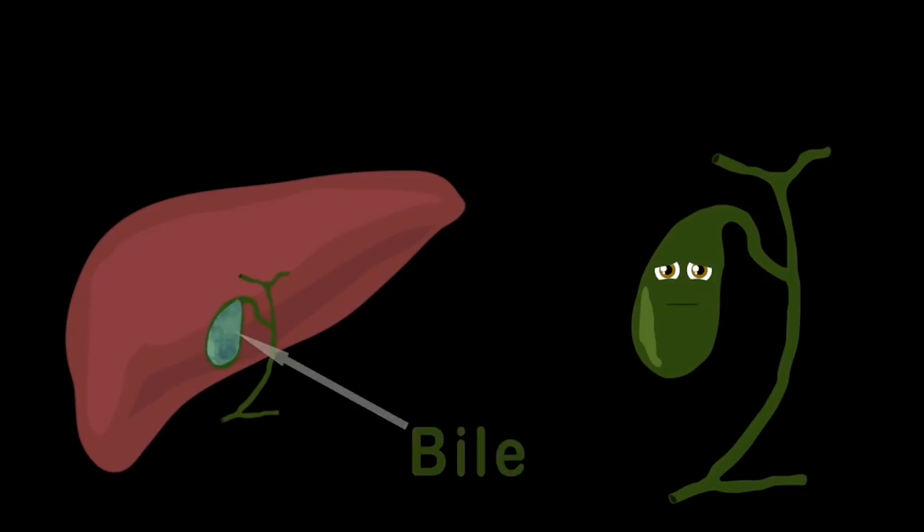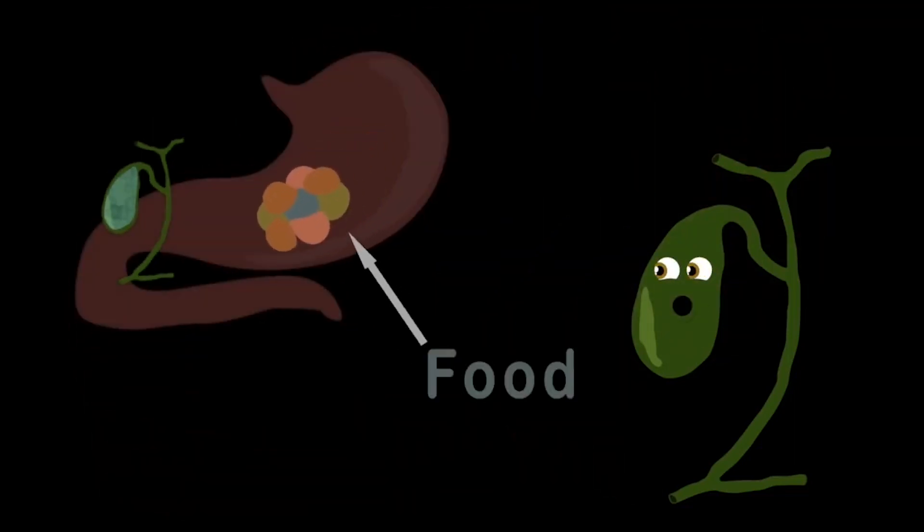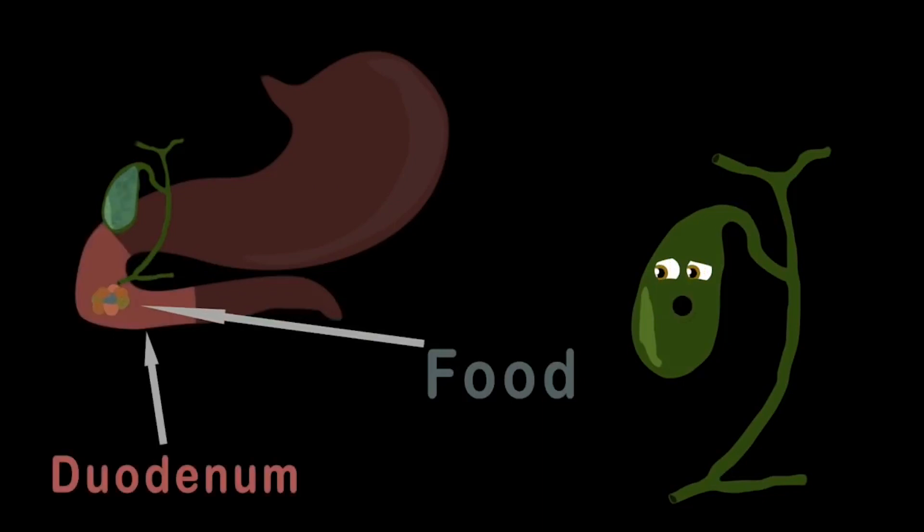I act as a reservoir by storing the bile that your liver pours. This bile is made and used to break down fats from all the eaten foods. When your food meets your stomach, it passes through the duodenum. Now that is a fact.